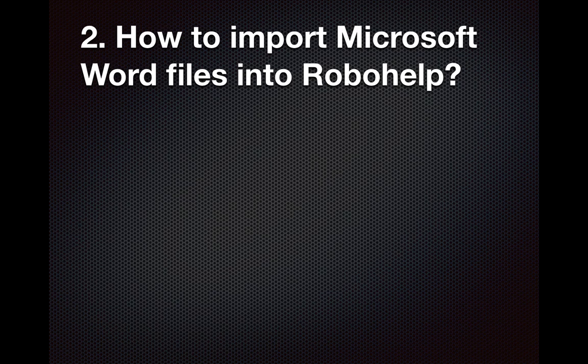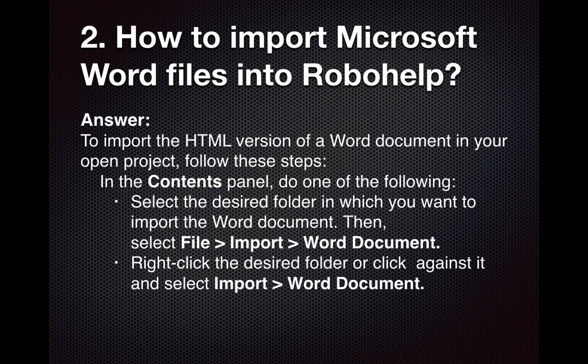Question number two: How to import Microsoft Word files into RoboHelp? To import the HTML version of a Word document in your open project, follow these steps. In the content panel, select the desired folder in which you want to import the Word document, then select File, Import, and Word Document. Or right-click the desired folder and select Import Word Document.